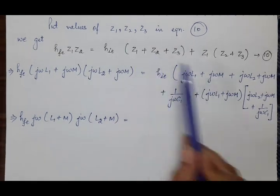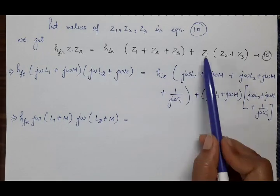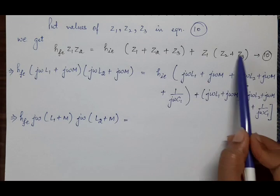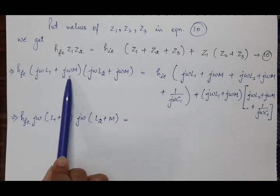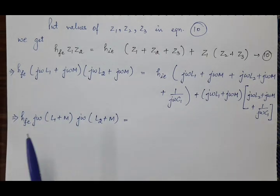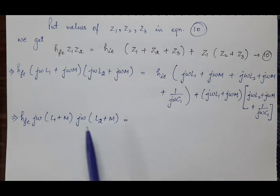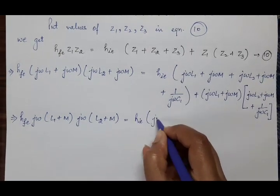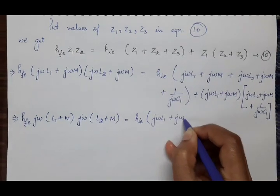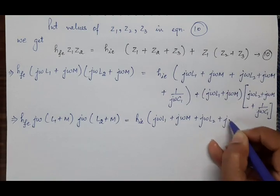With the values of Z1, Z2, and Z3 substituted into equation 10, we can see that jω is common in the first bracket, so take it common; and again jω is common in the second bracket, take it common. Now solve: hie·(jωL1 + jωM + jωL2 + jωM).